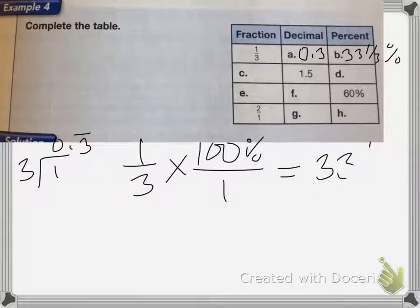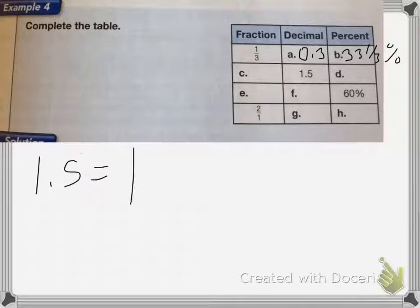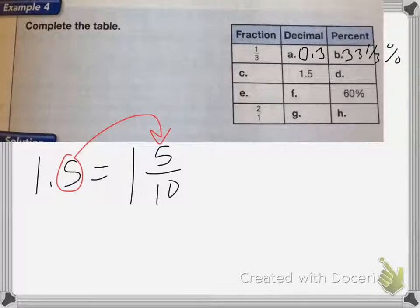On C, it gives me a decimal, 1.5. To make that a fraction, I know that's going to be 1 and 5 tenths. Because remember, the number goes into the numerator, and then the place value is the denominator. And that reduces down to 1 and 1 half.